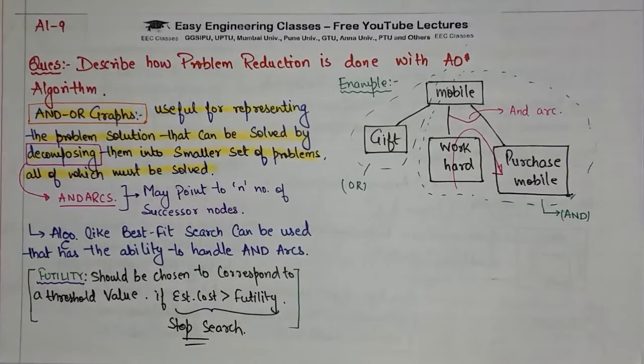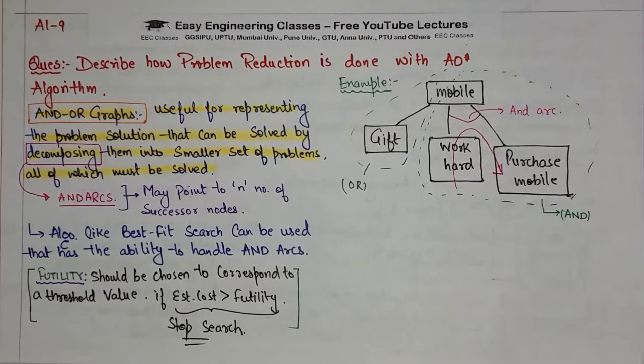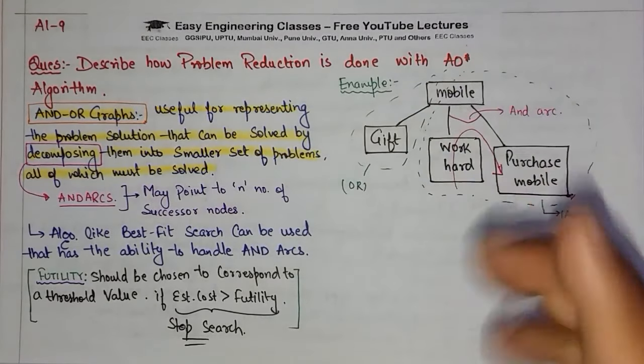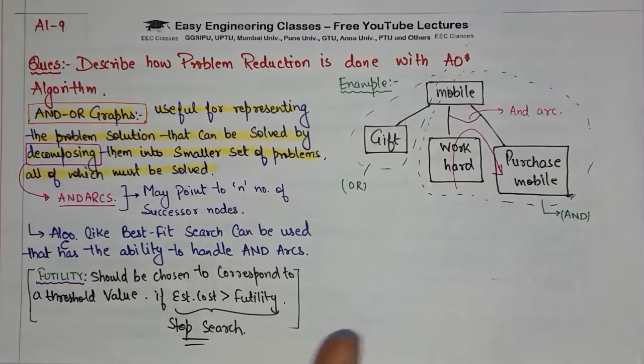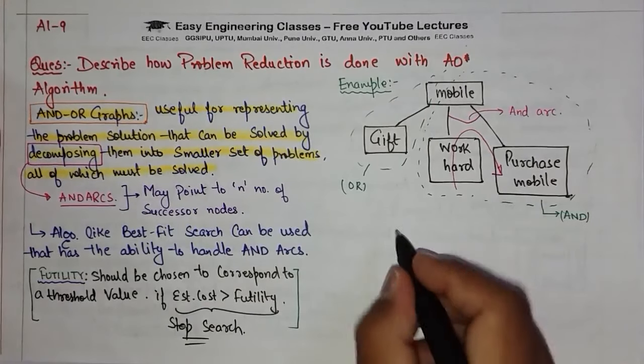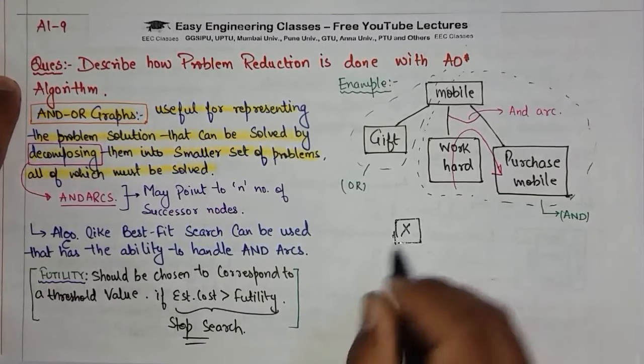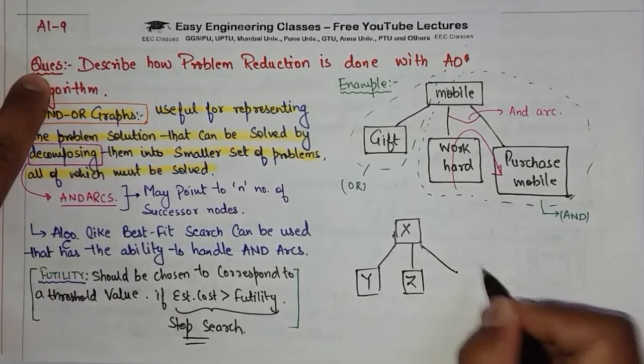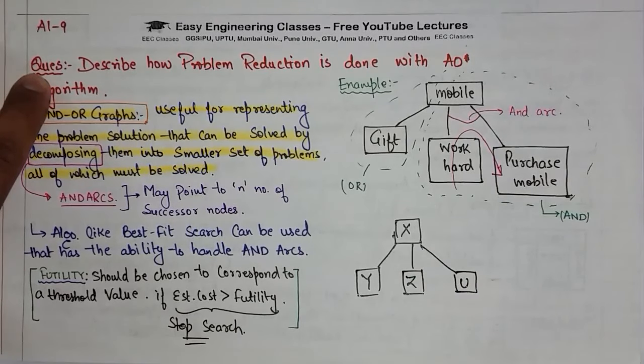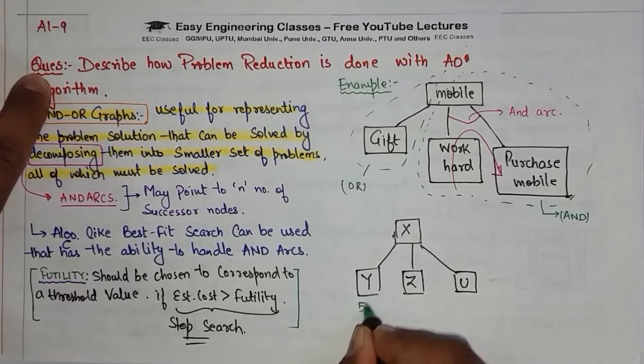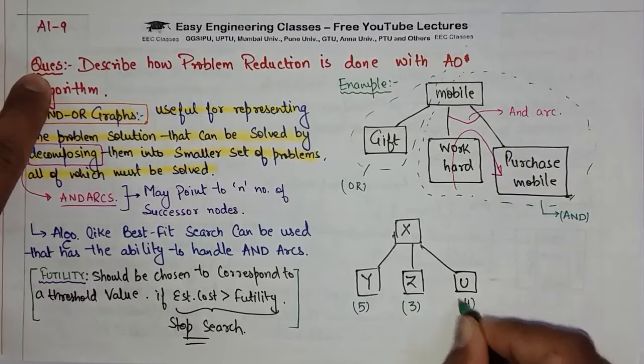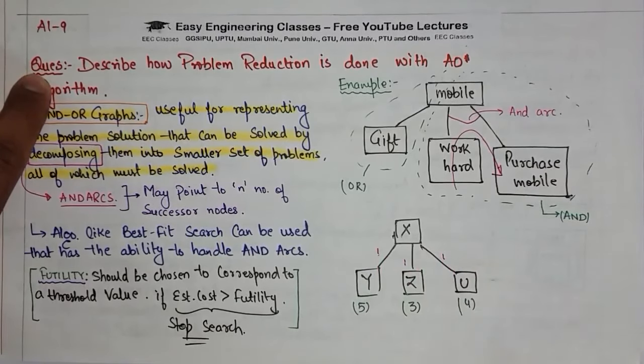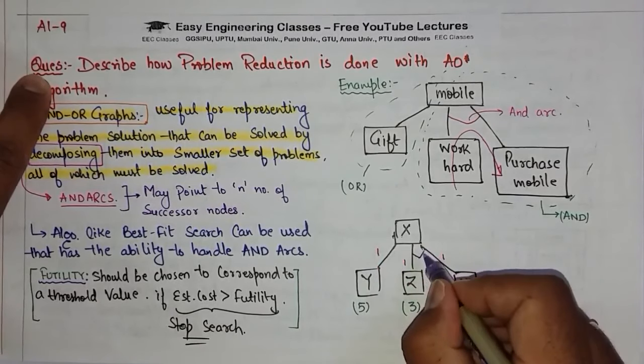Let us take an example: a node X, here we have one node Y, then we have Z and U node. The heuristic values given are: this is 5, this is 3, this is 4, and the cost given is 1.